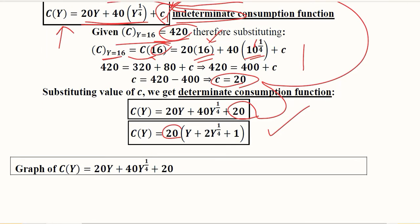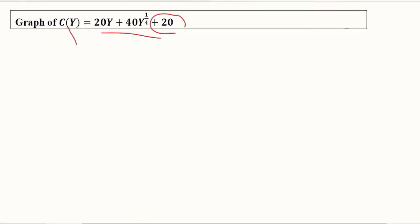Now we have the consumption function for which the graph is plotted. Since it is in definite form with no arbitrary constant in it, we can graph it.